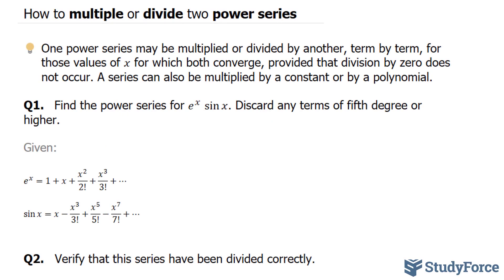In this tutorial, I'll show you two examples on how to multiply or divide two power series. One power series may be multiplied or divided by another, term by term, for those values of x for which both converge, provided that division by zero does not occur. A series can also be multiplied by a constant or by a polynomial.